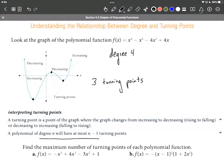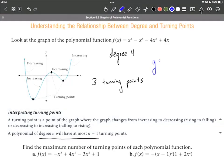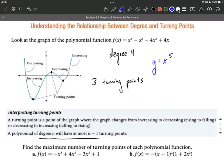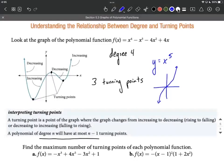Now functions don't always attain the maximum number. Like if we think about the graph of y = x^5, that's a degree 5, so it could have a maximum of up to four turning points, but the graph of x^5 is just an odd power function. It's increasing the entire way and doesn't have any turning points along the way. So it's a maximum number of turning points, not a set number that it has to attain.